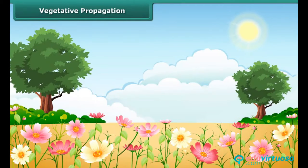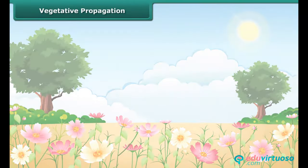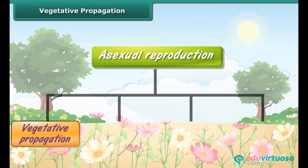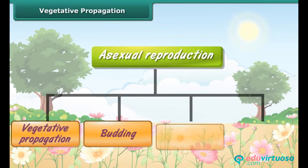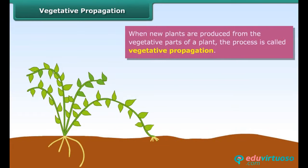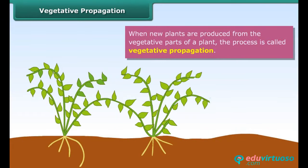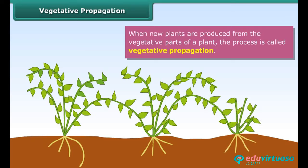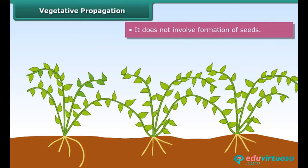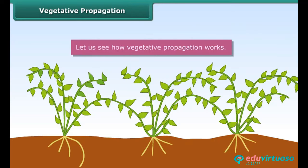Different methods of asexual reproduction are: vegetative propagation, budding, fragmentation, and spore formation. Let's discuss about them in detail one by one. When new plants are produced from the vegetative parts of a plant, the process is called vegetative propagation. It does not involve formation of seeds. Let us see how vegetative propagation works.